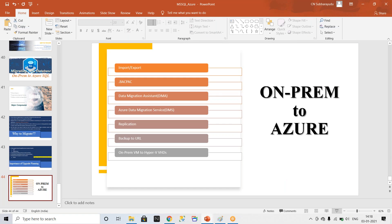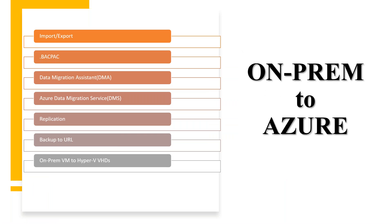These are the methods and approaches when migrating from on-premises to cloud. The first is Import/Export, and second is BACPAC — using the BACPAC method you can export the database schema and data. Import/Export also allows you to migrate schema and data. The most commonly used tool is the Database Migration Assistant, which you download and use to migrate data. There is also the Azure Data Migration Service — a cloud platform service you can use to migrate data either offline or online.